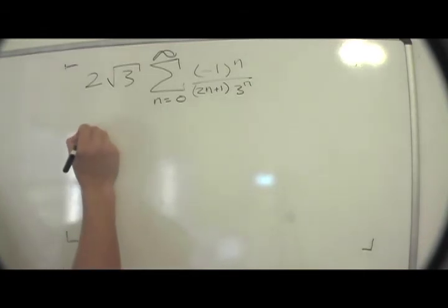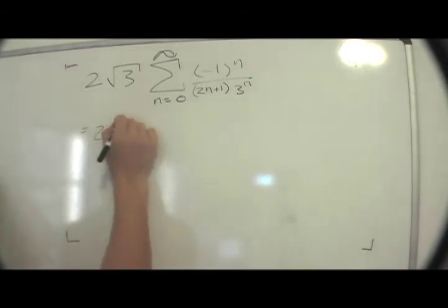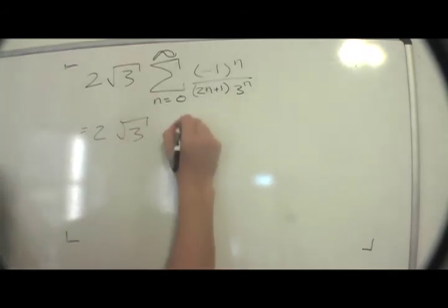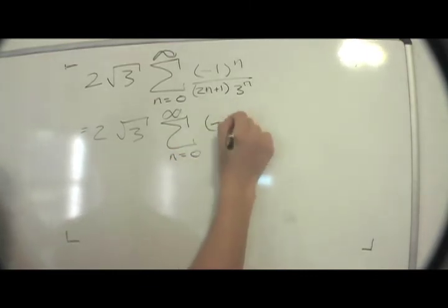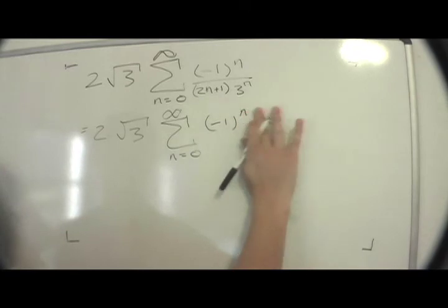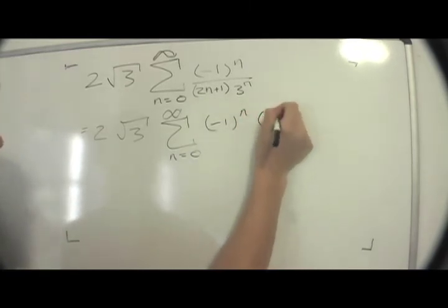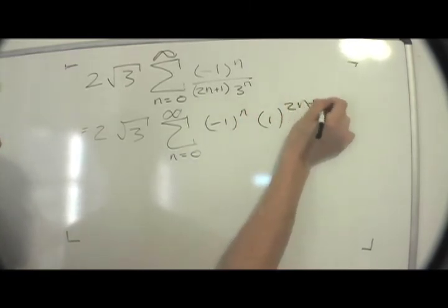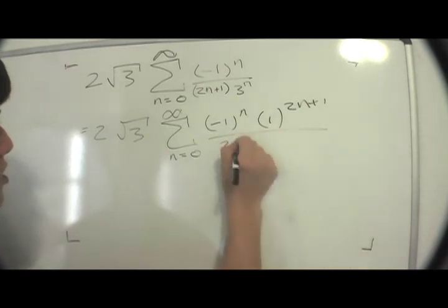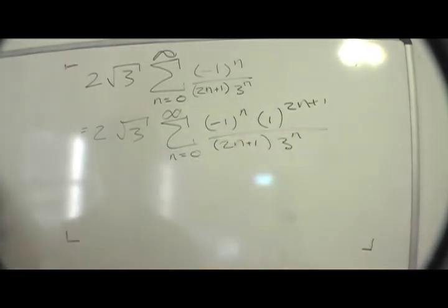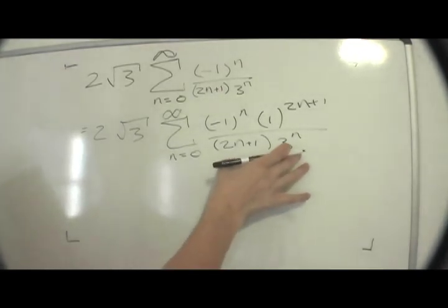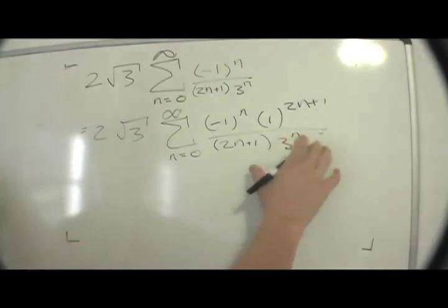And I'm going to rewrite this as 2 radical 3 sum from n equals 0 to infinity minus 1 to the n, 1 to the 2n plus 1 over 2n plus 1 times 3 to the n. Now this was a solution to the original problem evaluated at 1.